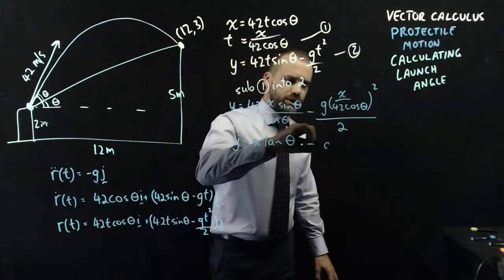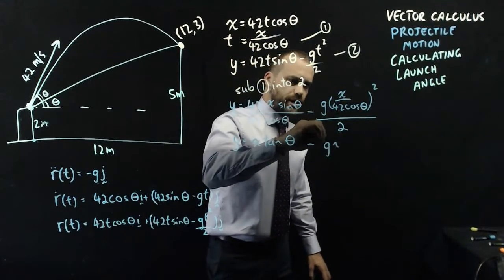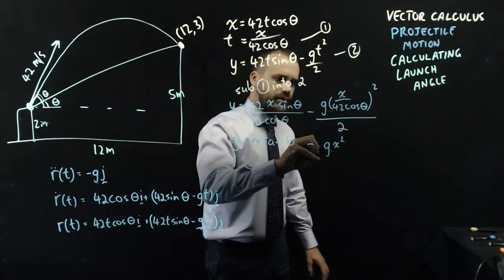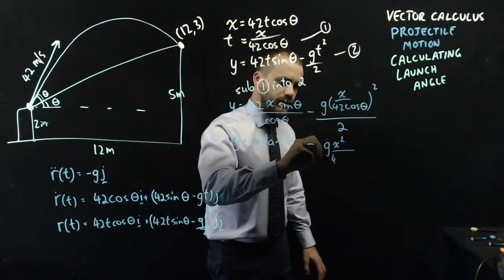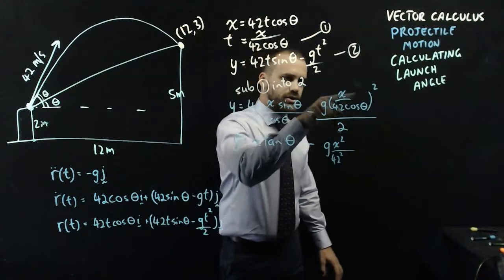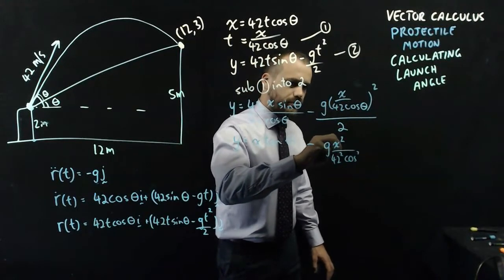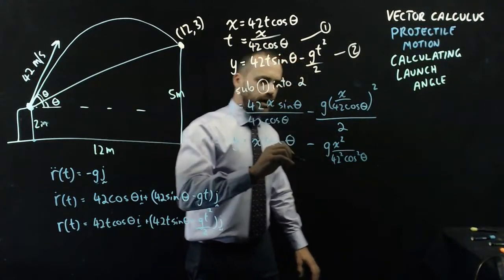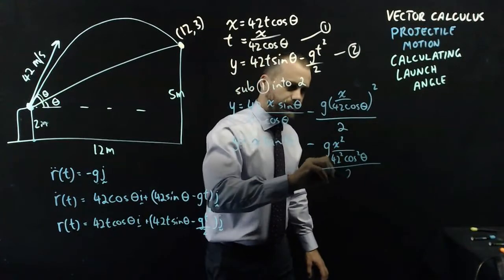And then this little bit here, well, I get g. I get x squared over 42 squared cos squared theta all over 2.